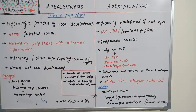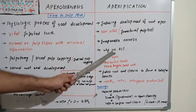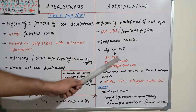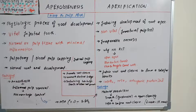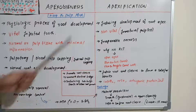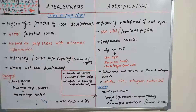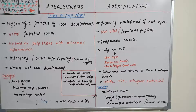In such cases we have no other option but to go for apexification. We cannot do routine root canal treatment on this tooth because there is an open apex, the canal is blunderbuss-shaped, and the canal walls are thin and fragile. For these reasons we must go for apexification — we need to seal and close the root end by inducing formation of a calcified barrier or an osteocement-like structure at the root apex.